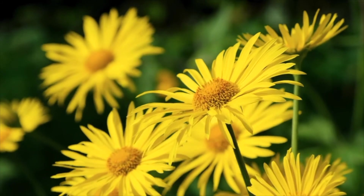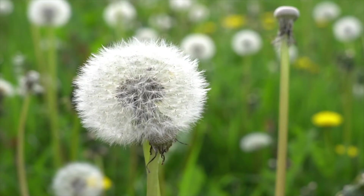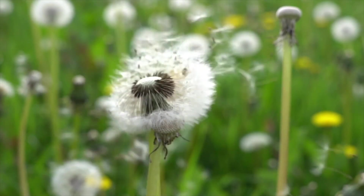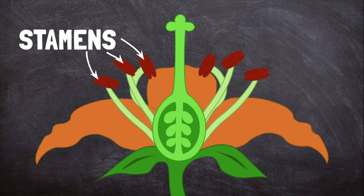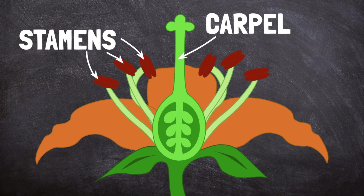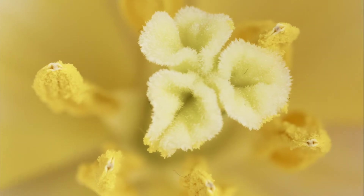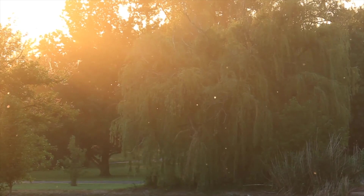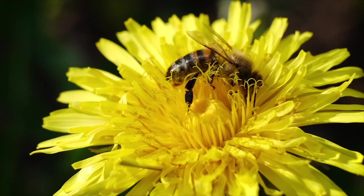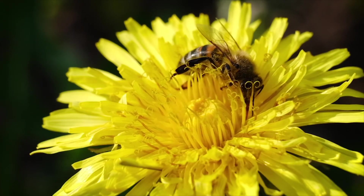Many plants also have flowers. Flowers are used for creating seeds to grow new plants. Flowers have male parts called stamens and female parts called carpels. The male part of the flower makes a dust called pollen that can travel from plant to plant with the wind or on the bodies of insects like bees and butterflies.